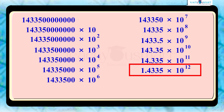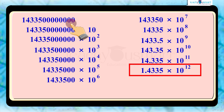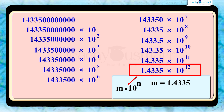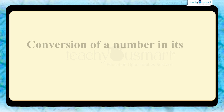We continue until the number becomes 1.4335 multiplied by 10 raised to 12, which is the scientific form. This is in the form of m multiplied by 10 raised to n, where m is 1.4335 — which lies between 1 and 10 — and n is equal to 12.